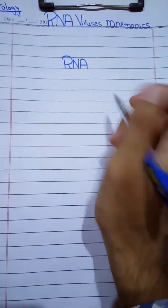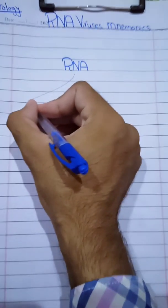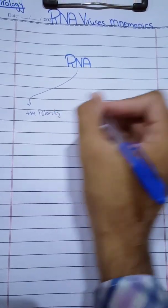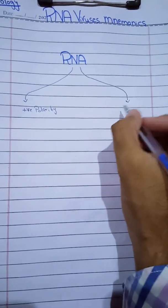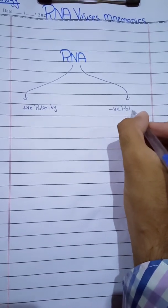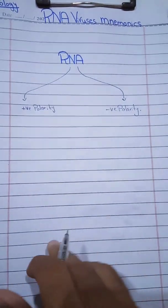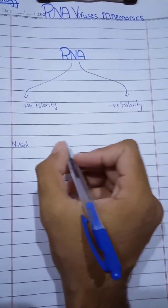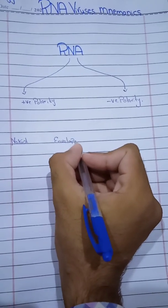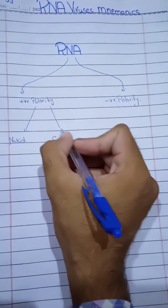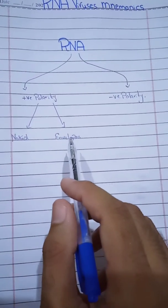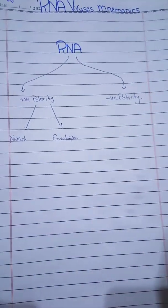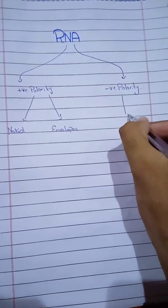There are two types of RNA viruses. The first type is positive polarity, and the second group of RNA viruses is of negative polarity. In the positive polarity group, they are further divided into naked viruses and enveloped viruses. Naked viruses are those which do not have an envelope, while enveloped viruses have an envelope made up of lipid. The negative polarity viruses are only enveloped.